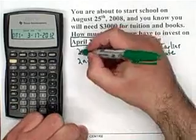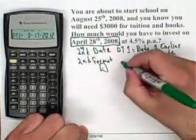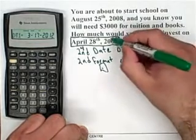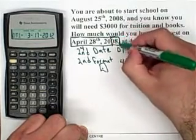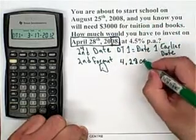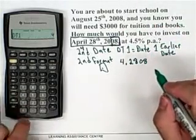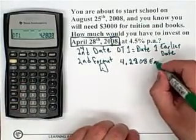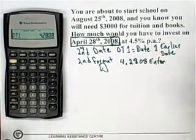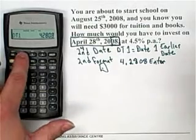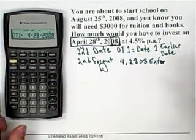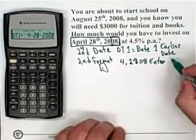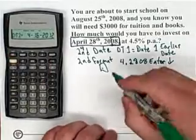The first thing that comes up is DT1, which stands for Date 1 — this is always the earlier date. Since it goes month, day, year, we need to know that April is the fourth month. So type in 4, decimal point, 28, then 08 for the year. So: 4, decimal, 28, 08, and then push the Enter button. If you do not push Enter, the number will not stay in the date function. So we now have April 28, 2008 entered. Now push the down arrow once to go to DT2.